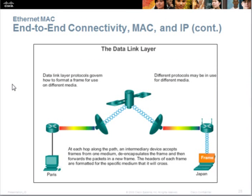For end-to-end connectivity, we need to ensure both the MAC address and the IP address are configured in the network packet. The data link layer governs how the frame is sent across different networks — for example, from a network in Paris to another network in Japan.